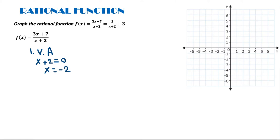Because we found the vertical asymptote, we can draw it here: x equals negative 2. So we are drawing the vertical asymptote, which is x is equal to negative 2.